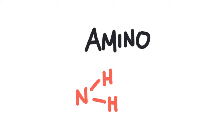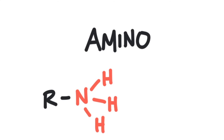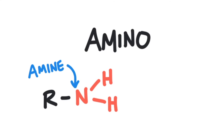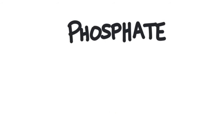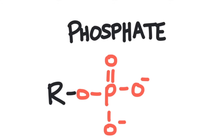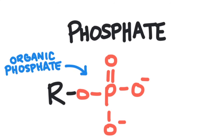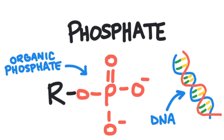Next is the amino group. This group consists of a nitrogen atom bonded to two hydrogen atoms. This compound is able to act like a base and pick up an extra hydrogen ion. Compounds that contain amino groups are called amines, and amino groups are found in molecules that make up proteins. The final group is the phosphate group, which consists of a phosphorus atom bonded to four oxygen atoms. Compounds with phosphate groups are called organic phosphates and they are found in the DNA molecule.